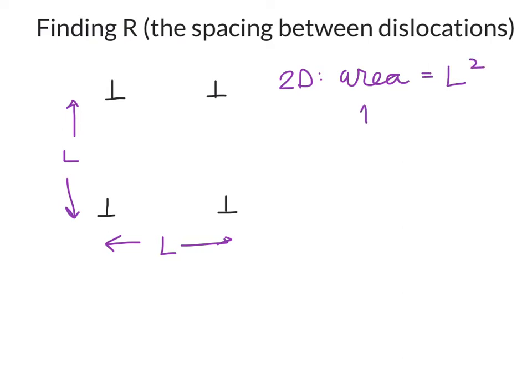In this case, we have one dislocation in that area L squared because you can sort of imagine that each of these is just contributing one or that we could recenter it. And so in a unit area, that's really what we want to know. In a unit area, if we have rho dislocations, we can say that the dislocation density is simply the inverse of the area. And so that's how we define a dislocation density, the number of dislocations per unit area.